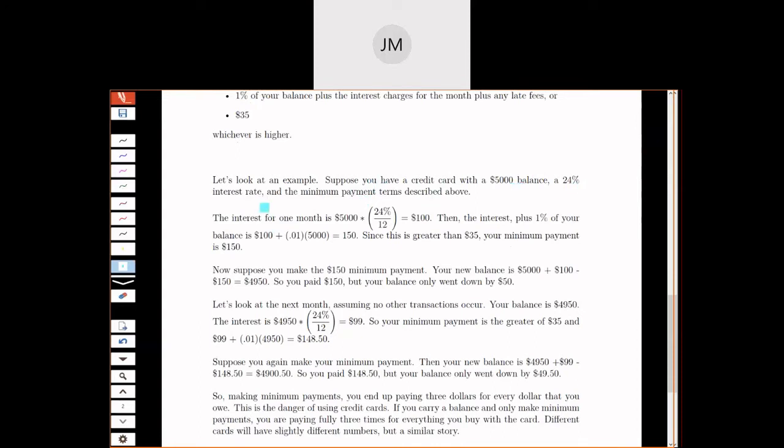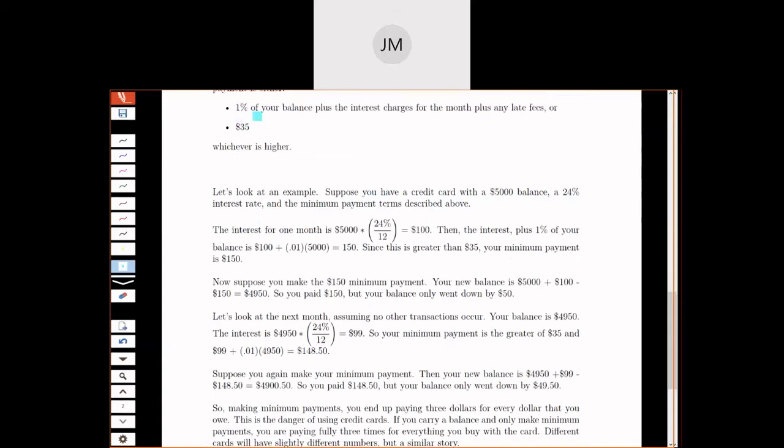So what we're going to do is we're going to look at an example of a credit card with a $5,000 balance. We're going to use that 24% interest rate, which is fairly common. And we're going to use this minimum payment terms above. Okay, so if I want to look at the interest for one month, and just to make things simple, let's just suppose we have a $5,000 balance all month long. So we're going to use this as our average daily balance also. Okay, so if I had $5,000 for my average daily balance, and I multiply by 24% over 12, right, 0.24 over 12, I'll get $100. So our interest charge is $100.